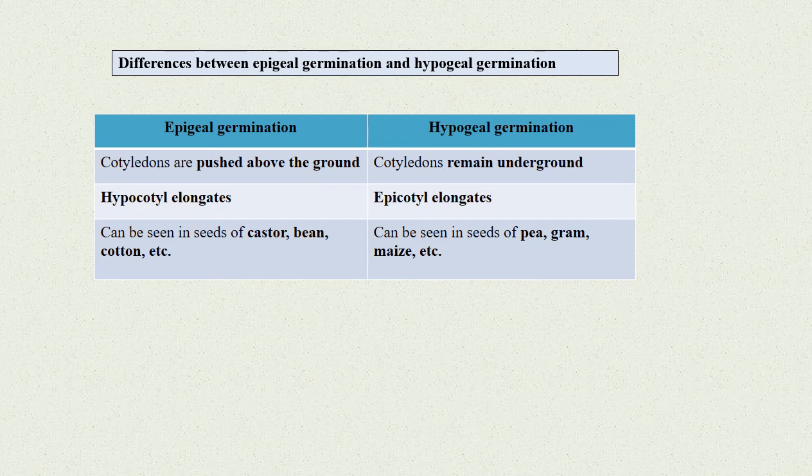Hypogeal germination can be seen in seeds of pea, gram, maize, etc. An important point here is, either epicotyl or hypocotyl elongates during seed germination.